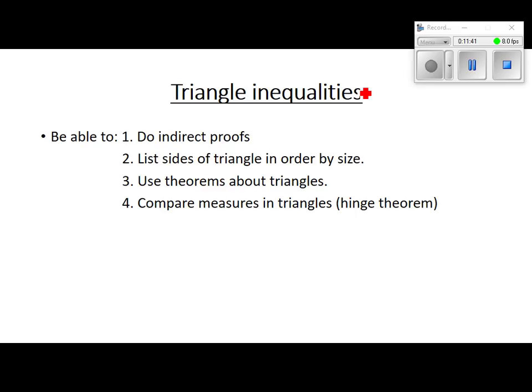Indirect proofs involve a lot of writing — we're not going to do a whole lot of them. We're going to list triangle sides in order by their size, and I should add: not just sides but also angles. We're going to list sides and angles of a triangle from smallest to largest and largest to smallest. We'll use the theorems about triangles — any two sides must add up to be more than the third side. We'll also talk about the hinge theorem.